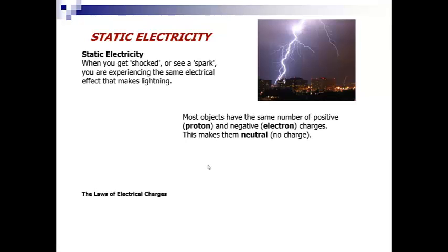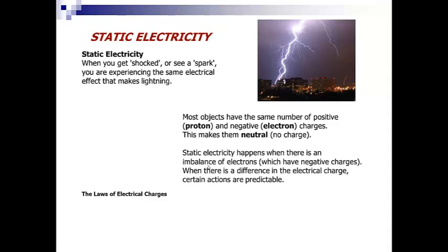Static electricity. When you get shocked or see a spark, you are experiencing the same electrical effect that makes lightning. Most objects have the same number of positive, or protons, and negative, or electrons, charges. That makes them neutral, or having no charge. Static electricity happens when there is an imbalance in electrons, which have electrical charges. When there is a difference in the electrical charge, certain actions are predictable.